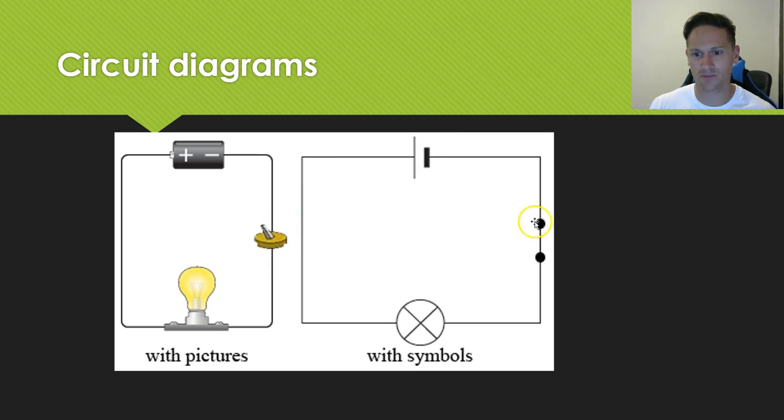We've got a switch, and that's represented by two dots, and that line in the middle is basically the switch being closed. If the switch was open, then that line would be represented going outwards like this, or like this, so not connected. And then our light globe is represented by a circle with a cross through it.